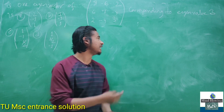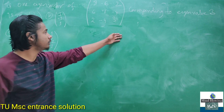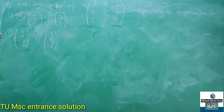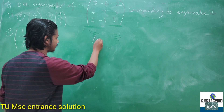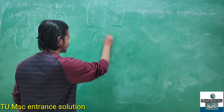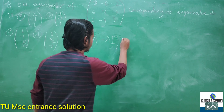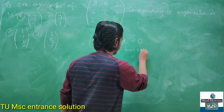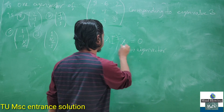The next question is from Tesco University entrance. They give a matrix and ask about the eigenvector. If A is a given n×n matrix and λ is the eigenvalue, then (A - λI)x = 0, where x is the eigenvector. We need to find the eigenvector x.